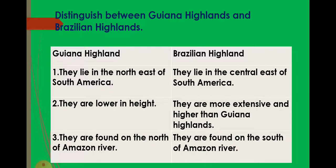Distinguish between the Guiana Highlands and the Brazilian Highlands. The Guiana Highlands lie in the northeast of South America, while the Brazilian Highlands lie in the east-central part. The Guiana Highlands are lower in height, whereas the Brazilian Highlands are more extensive and higher. The Guiana Highlands are found to the north of the Amazon River, and the Brazilian Highlands are found to the south of the Amazon River.